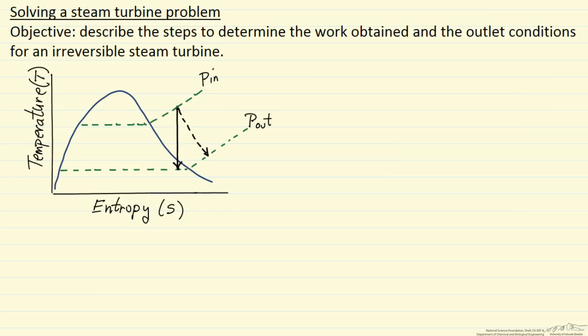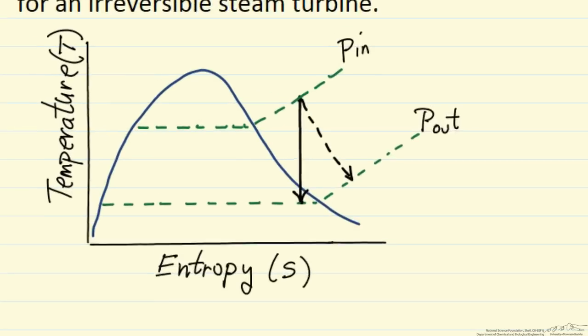In this screencast I am going to describe the steps used to obtain the work from a steam turbine and what the outlet conditions would be. This is for an irreversible turbine.